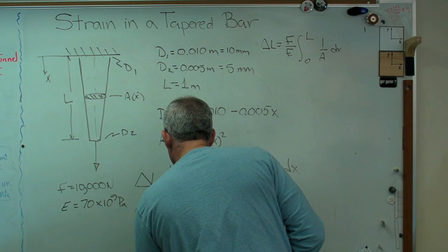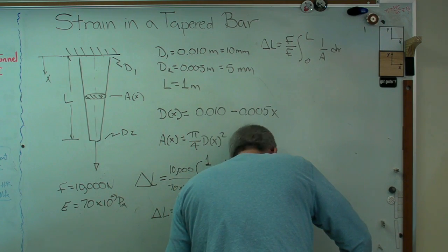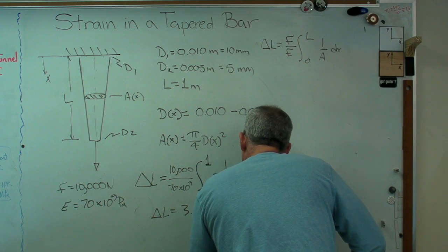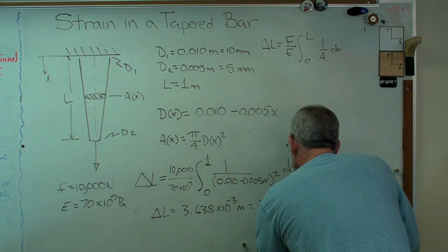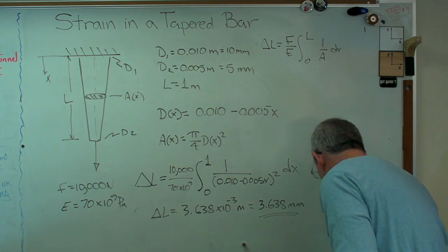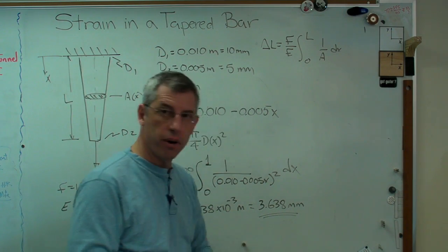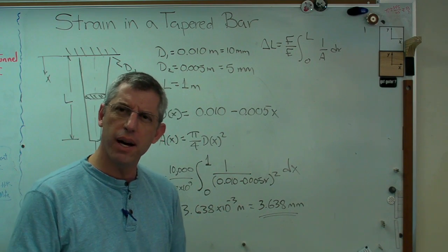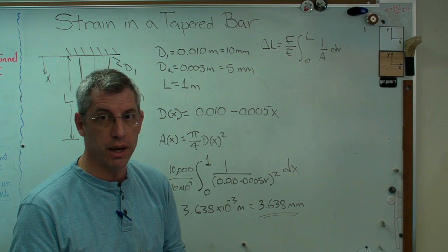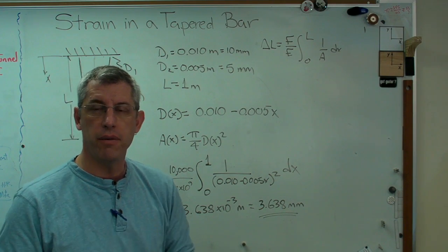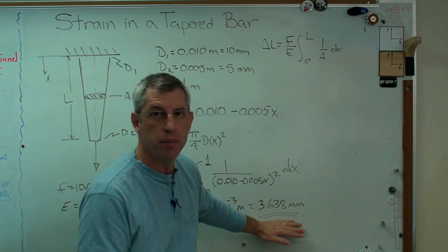If you work this out, you get delta L equals 3.638 times 10 to the minus 3 meters. That's just 3.638 millimeters. Does this make sense? Could that be the right answer? I always tell my students, always give your answers the sniff test. Whenever you calculate a number, just stand back and take a look and say, could that be the right answer? Because if you're the one person in the room who's able to find a mistake and be able to say, look, that's not the right answer, if you're the one person in the room that can do that, you're automatically the most valuable person in the room.